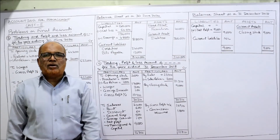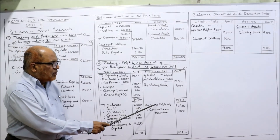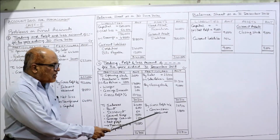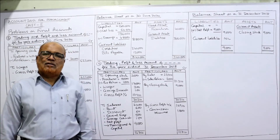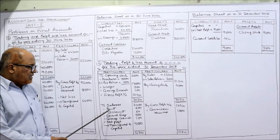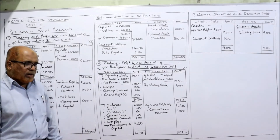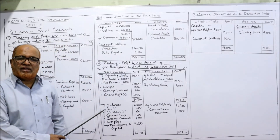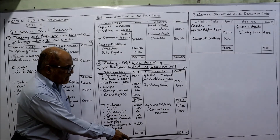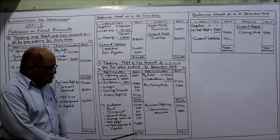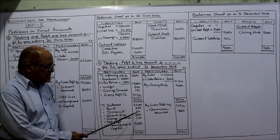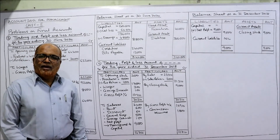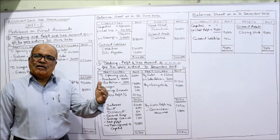Gross profit brought down to profit and loss account: 10,910. Other income — commission received: 1,800. Credit side total: 10,910 plus 1,800 equals 12,710. Expenses on debit side: salaries, rent, discount allowed, general expenses, carriage outward — five expenses in total. From 12,710, minus 2,400, minus 600, minus 60, minus 500, minus 150 — net profit is 9,000 rupees. This net profit will be added to capital in the balance sheet.